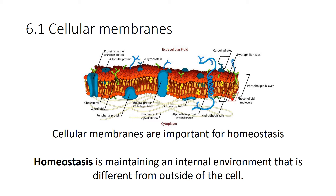Cellular membranes are really important for maintaining homeostasis — maintaining an internal environment that is different from the outside world. For example, maintaining an electrolyte balance would be maintaining homeostasis, and that also helps with maintaining our water balance as well.